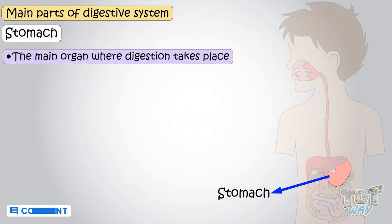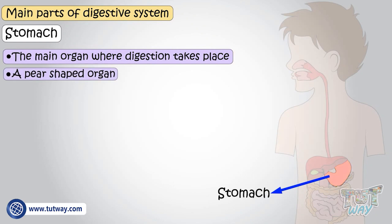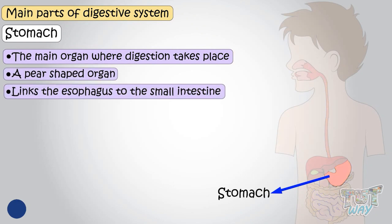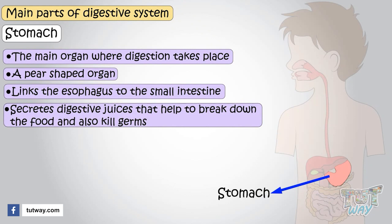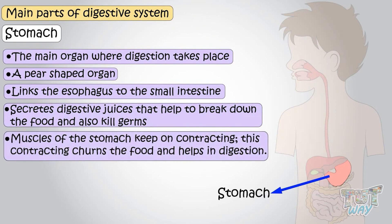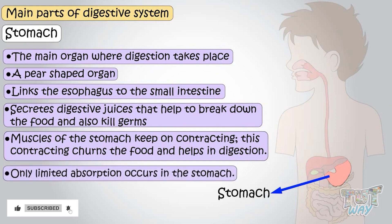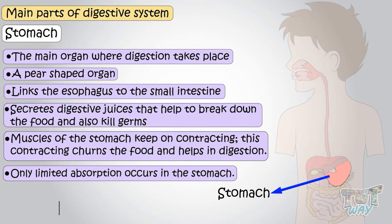Stomach — the stomach is the main organ where digestion takes place. It is a pear-shaped organ that links the esophagus to the small intestine. The stomach secretes digestive juices that help to break down food and also kill germs. Muscles of the stomach keep contracting, which churns the food and helps in digestion. However, only limited absorption occurs in the stomach; complete absorption will take place in the next organ.